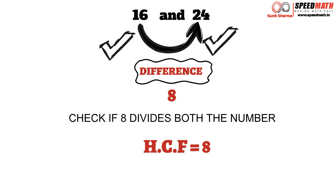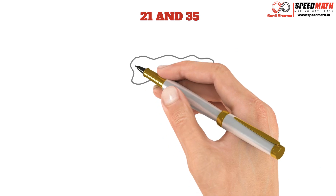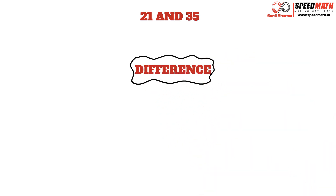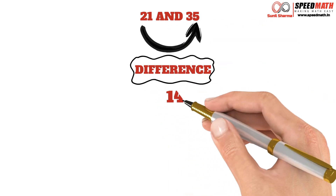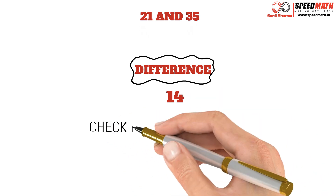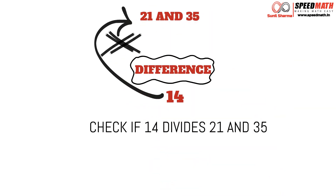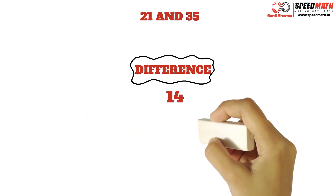Let me take another example. Let's say we need to find HCF of 21 and 35. Step 1: find the difference between 35 and 21, and we know 35 minus 21 will give you 14. Step 2: let's check whether 14 divides 21 and 35. Now you can see 14 does not divide 21, so since 14 does not divide one of the numbers, as I mentioned earlier, we cannot consider 14 as an HCF.